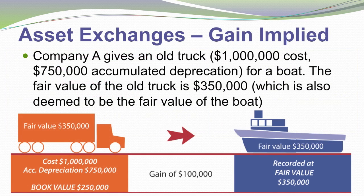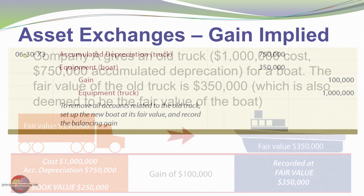Now let's consider a case where we have a gain. We're giving up the same truck: cost of $1 million, accumulated depreciation of $750,000, a net book value of $250,000. But we're swapping it for a much better boat — a boat that's viewed to be worth $350,000. The book value of what's given up is $250,000, the fair value of what's received is $350,000, so we've got a $100,000 gain suggested.